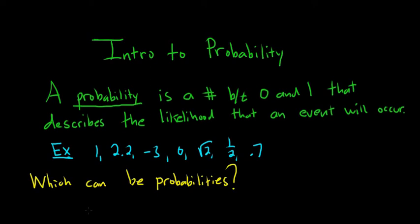So to figure out which can be probabilities, it's all the numbers between 0 and 1. So 1 can certainly be a probability. So it's 0 to 1 inclusive, including 0 and 1. 2.2 fails, because it's bigger than 1. You cannot have a negative probability. 0 works. So 0 is one of the answers. 0 can be a probability. The square root of 2 is like 1.4 something, so that fails.